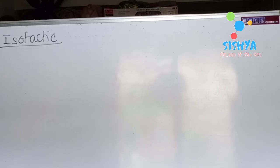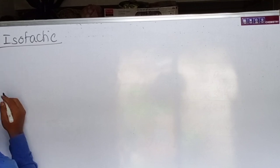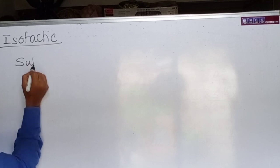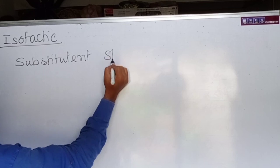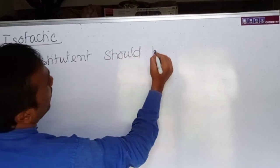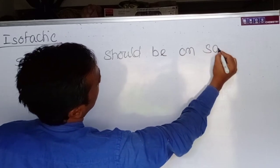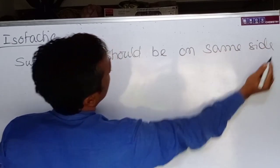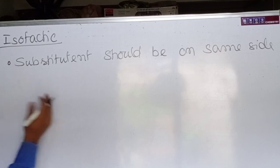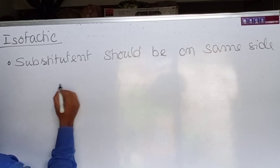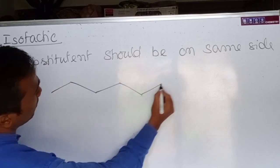Let's discuss the types of polymers. Basically, polymers are classified as isotactic, syndiotactic, and atactic. For isotactic polymers, the substituents should be on the same side. If the substituents are on the same side, then it is called isotactic.